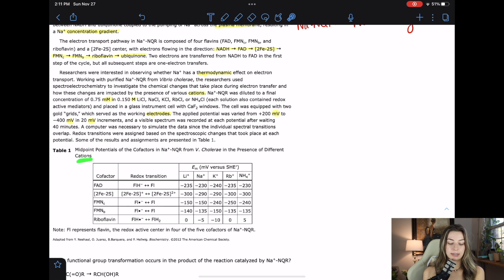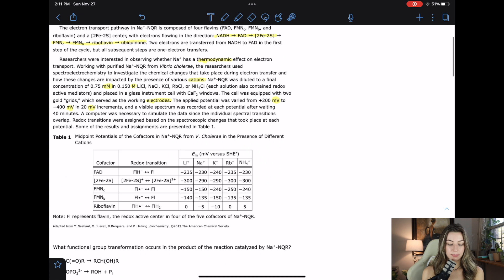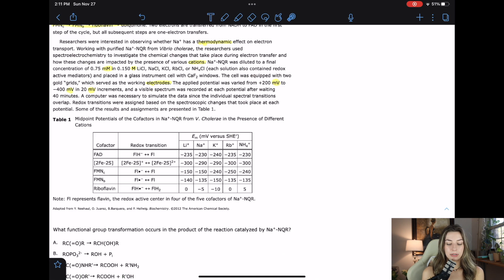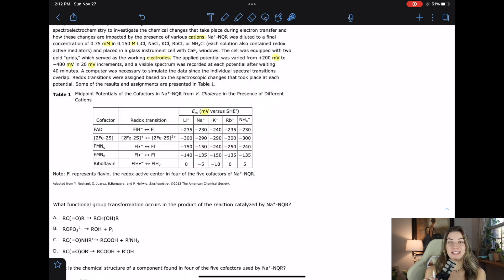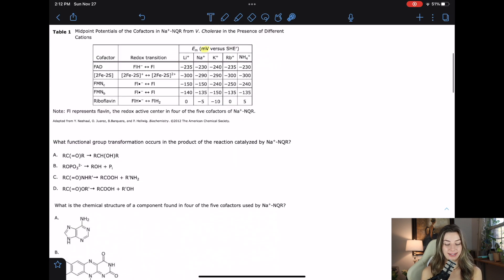Table one, midpoint potentials of the cofactors in sodium NQR from V cholera in the presence of different cations. So exactly what they were doing earlier, right? They wanted to see how this enzyme worked with different cations. So we got the midpoint potentials of that. I don't really know what a midpoint potentials means, but potential I know is like an electricity thing. I'm going to pay attention in this graph to the fact that these are in millivolts and these are the cofactors because this test is kind of hard.